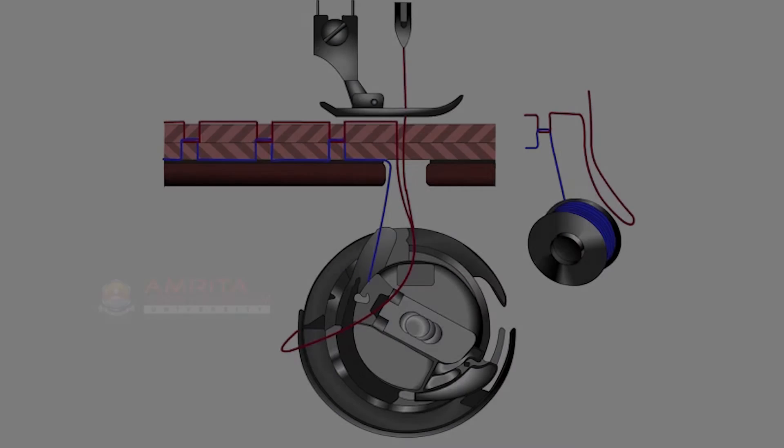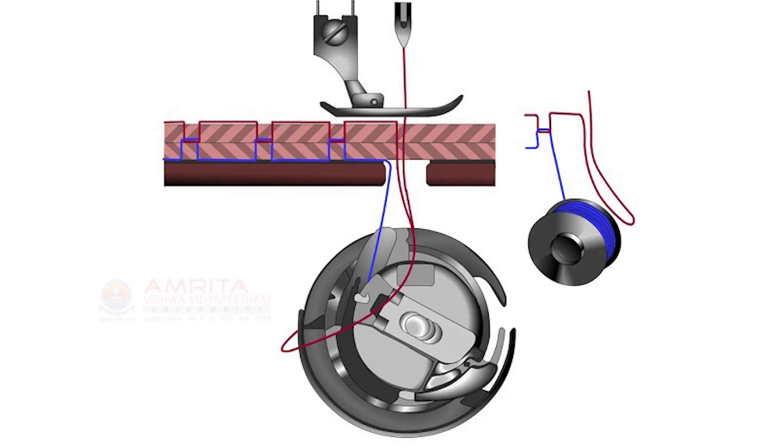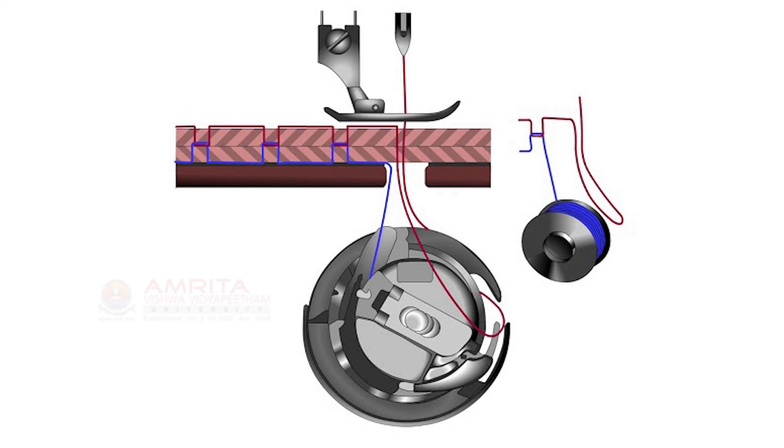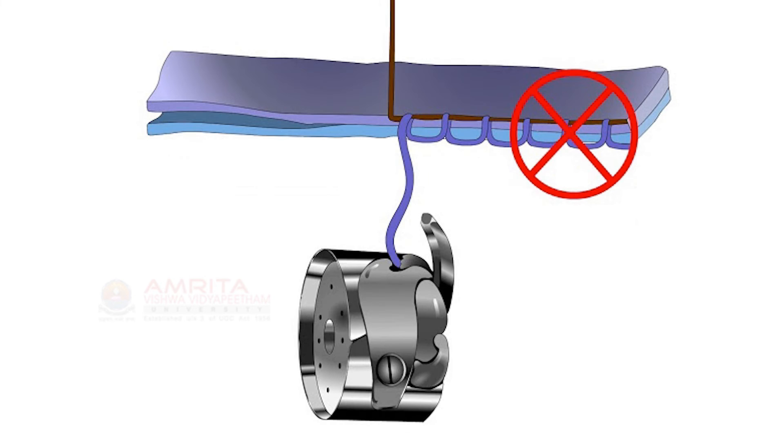Now that we created a stitch formation, let us have a closer look at the stitches that were made. A balanced stitch has the upper and lower thread locked right in the middle of the cloth. The stitches will look alike on either side.